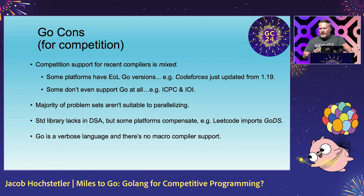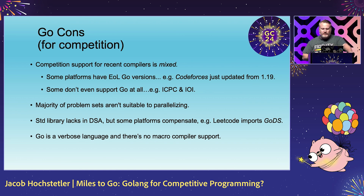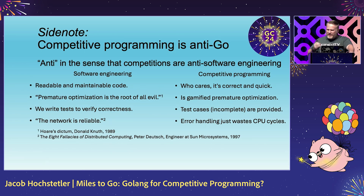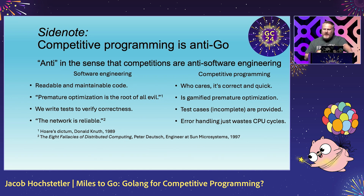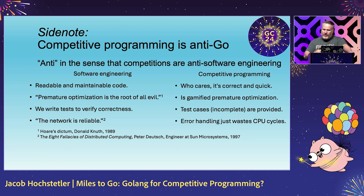Go is also a verbose language with no macro support — thankfully. So what you have in C and C++ is a lot quicker typing. Competitive programming is sort of anti-Go, in the sense that competitions are anti-software engineering. Simply put, software engineering is about writing code you want to maintain; competitive programming is about writing code you want to throw away.